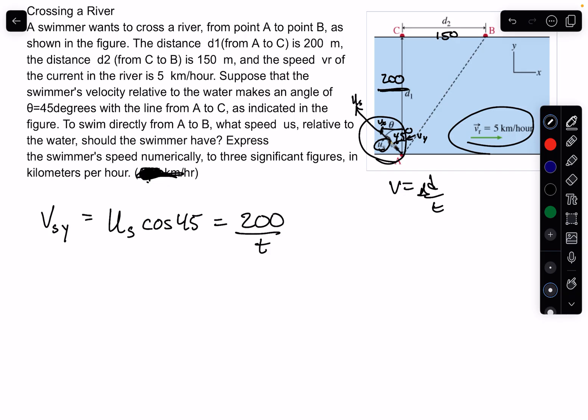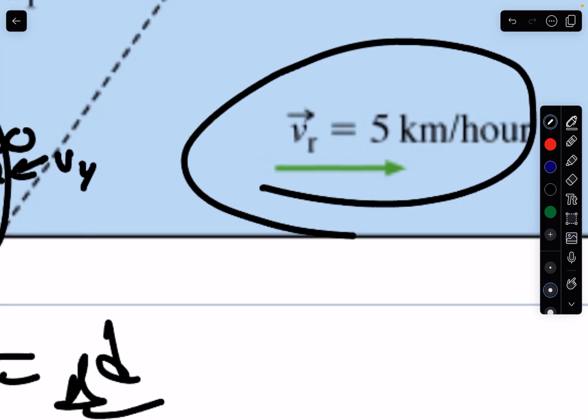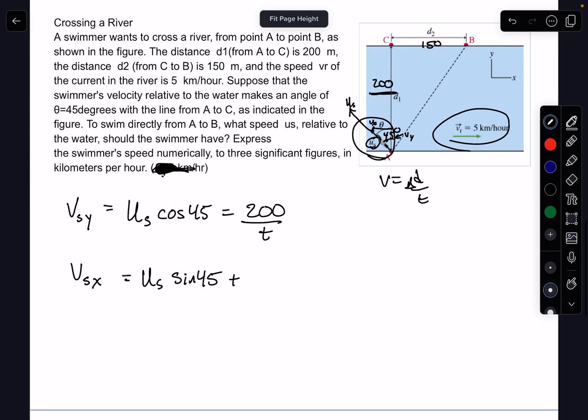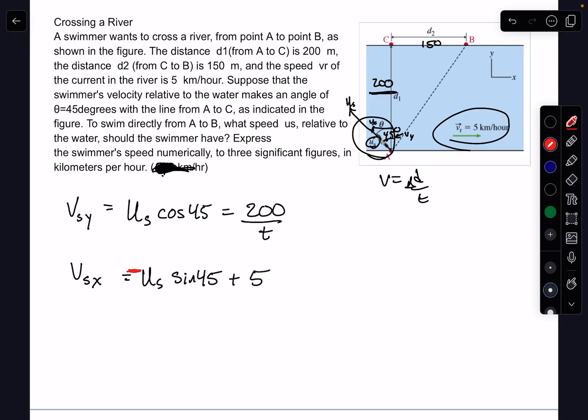I'm going to do the same thing with the X direction. The V of the swimmer in the X direction would be equal to Us sine 45, but you've also got the current flowing at 5 kilometers per second. I need to put a negative sign here because the person needs to swim backward. So it's negative Us sine 45 plus 5, and that equals 150 over t.